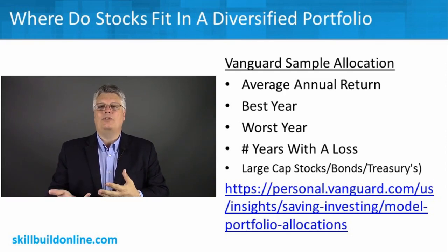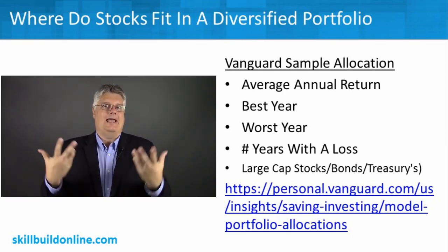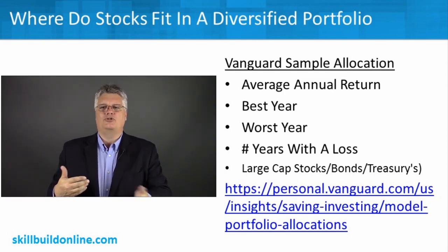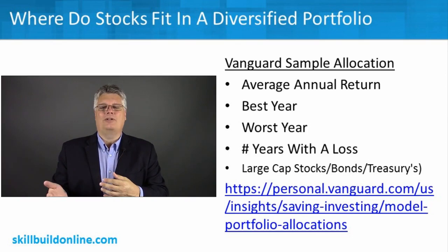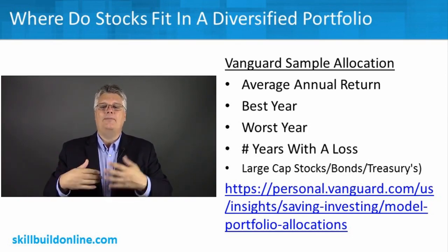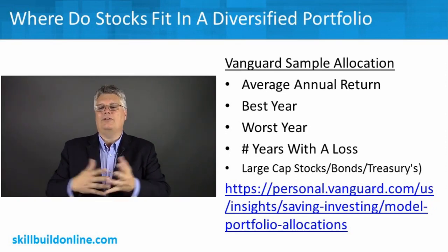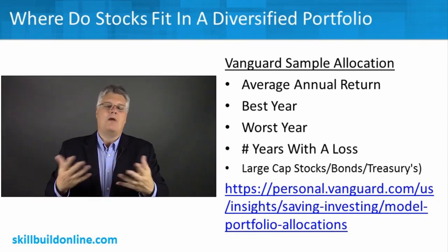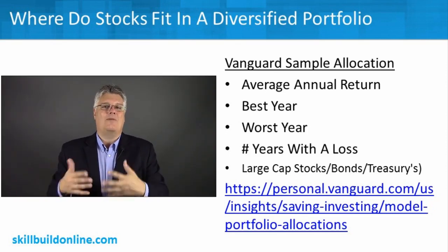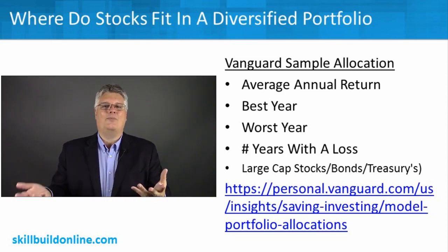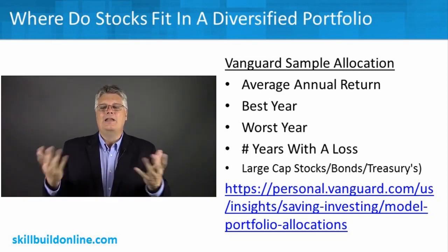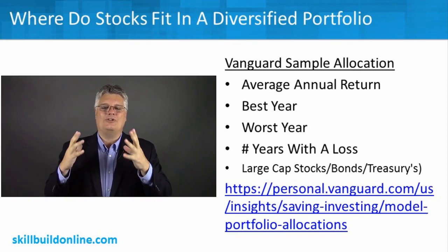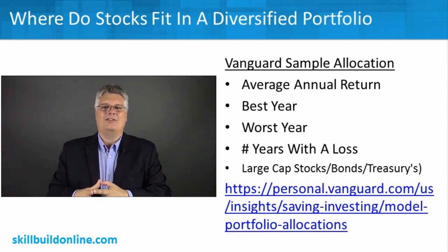I'm going to share one with you because I think it's really good and gives you some actual numbers versus just guessing or theory or saying you're a modern investor so you should be 50% stocks, 50% bonds. It actually gives you some historical data, and it happens to be from Vanguard. Here's the link on the slide, but basically search Vanguard model portfolio allocations and you'll find it pretty easy.